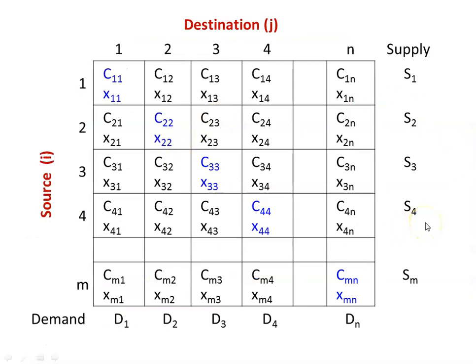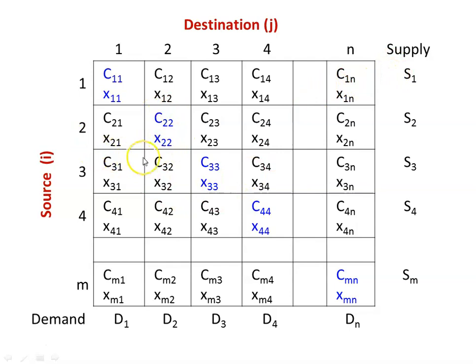The entire transportation model is represented by a table. Source points are 1, 2, 3, 4 up to m, and destination points are 1, 2, 3, 4 up to n. The supply capacity of each source is given on the right side of the table as S1, S2, S3, S4, up to Sm. The demand of each destination is given at the bottom row as d1, d2, d3, d4 up to dn. Inside each cell, the unit cost of transportation cij is given — for example, c11 for source 1 to destination 1, and x11 is the number of items transported from source 1 to destination 1.